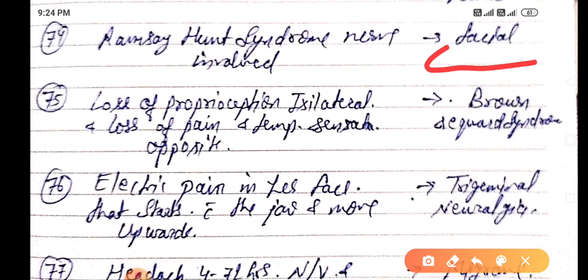Loss of proprioception ipsilateral and loss of pain and temperature sensation opposite, it is mainly due to Brown-Sequard syndrome.